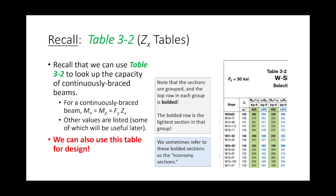There are two reasons you might not select the W24 by 62. One is architectural limitations — if the architect says you only have 18 inches of space, you can't use a W24 by 62 because the beam is too deep. The second, more practical reason: maybe they're on back order at the service center. We'll assume infinite supply and no architectural limitations unless spelled out in the problem.